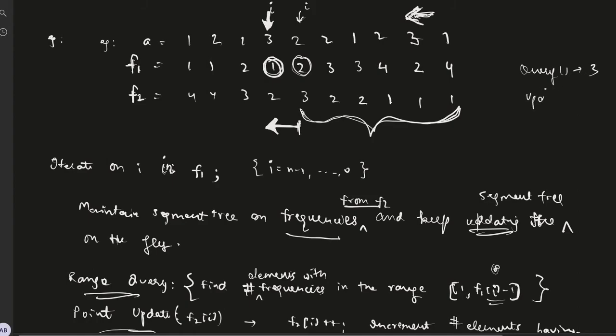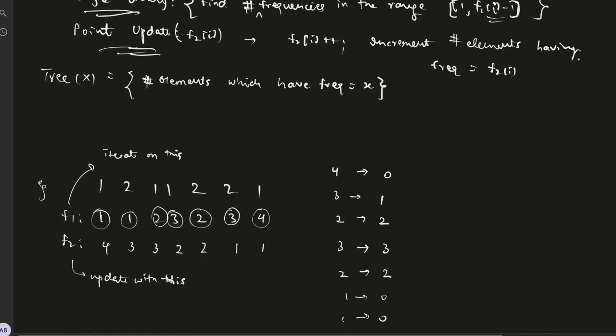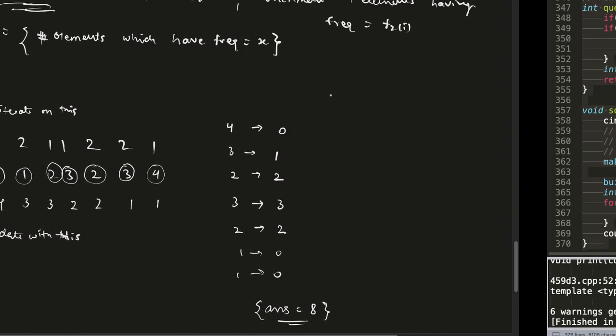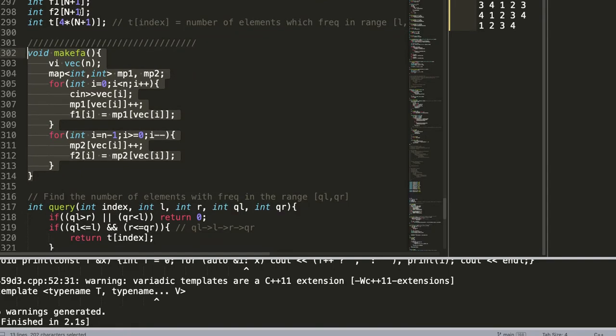After update, what update would have done is it would have incremented - in the segment tree it would have performed a point update where it incremented the frequency of 3 by one. It's a point update. Now the tree basically stores the number of elements which have frequency equal to x. This is the approach.